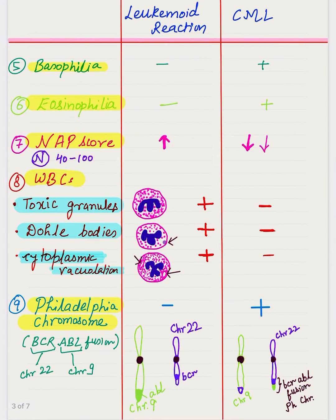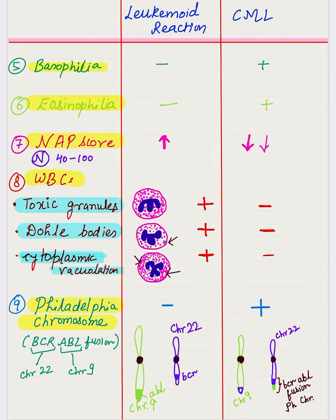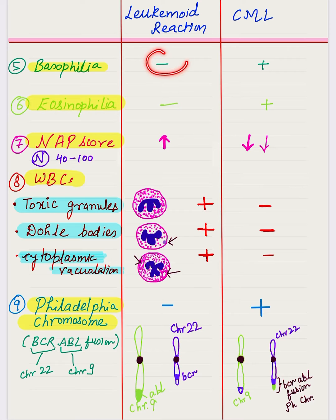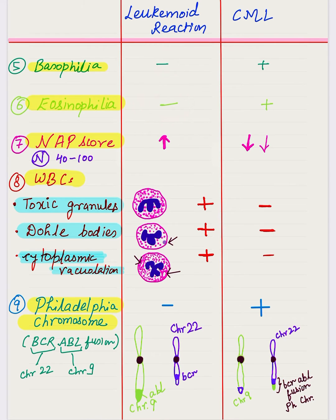In the peripheral smear, basophilia and eosinophilia are seen in chronic myeloid leukemia. These features are not seen in leukemoid reaction, making this an important distinguishing difference.